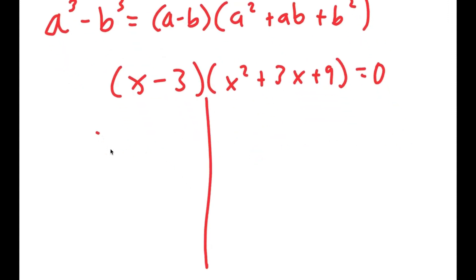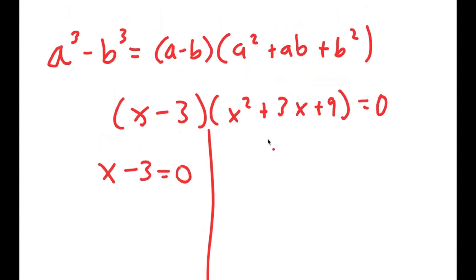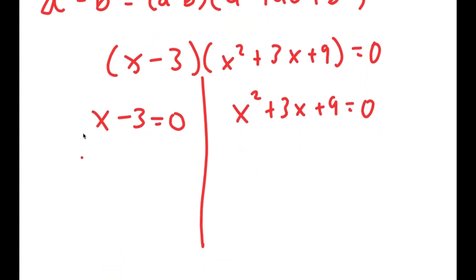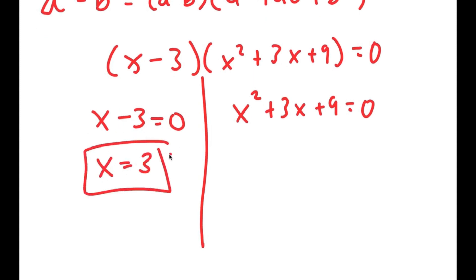So now from here I get two equations. I get x minus 3 equals 0, and x squared plus 3x plus 9 is equal to 0. So obviously for x minus 3 equals 0, x is equal to 3. So this is one solution.